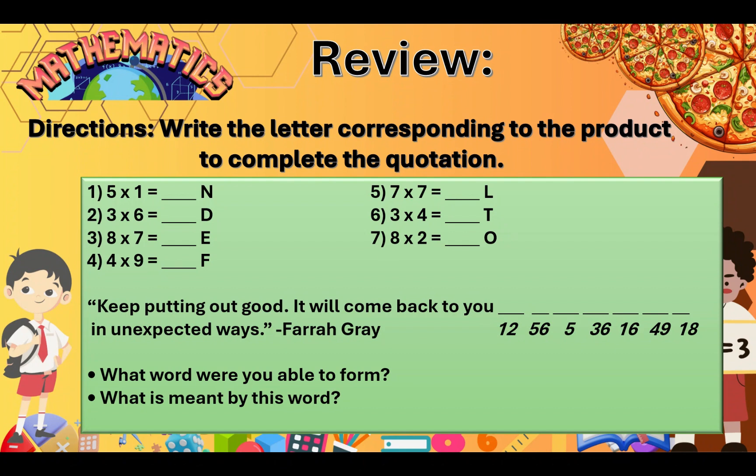Number 6, 3 times 4 equals T. Number 7, 8 times 2 equals O. So, the quotation says, keep putting out good. It will come back to you blank in unexpected ways according to Faragrae. So, you need to arrange the letters and put it there on the spaces above the numbers in order to complete the quotation.